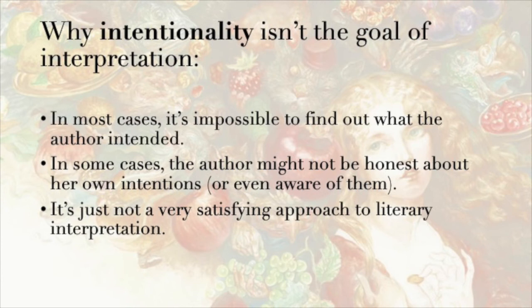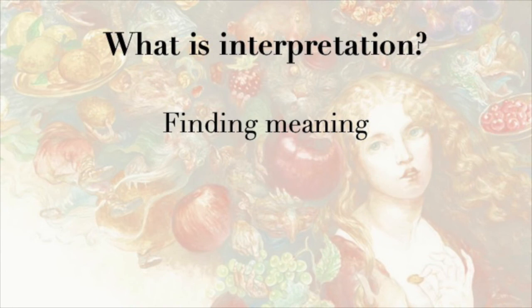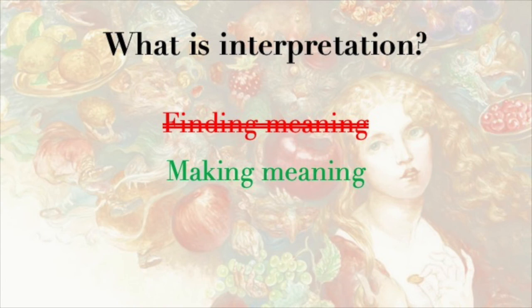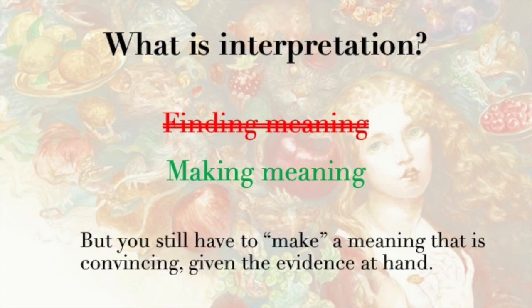So most scholars today think about interpretation very differently. Rather than thinking of interpretation as the act of trying to find meaning — like we're on some kind of treasure hunt — instead they'll talk about interpretation as the art of making or constructing meaning. The implication is pretty clear: critics aren't limited to one true meaning. Rather, their job is to build an interesting and compelling interpretation out of the evidence at hand. As a result, it doesn't make sense to talk about an interpretation being right or wrong. Those terms just don't apply.